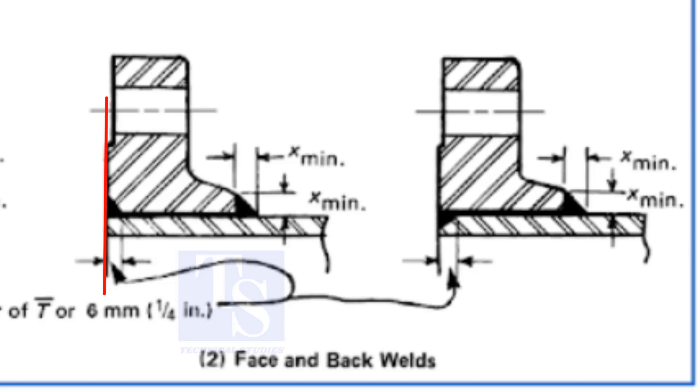In the second method, the face of the pipe and the flange are the same. Here, you can see the flange is beveled.